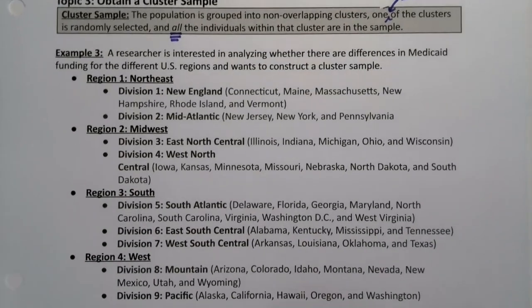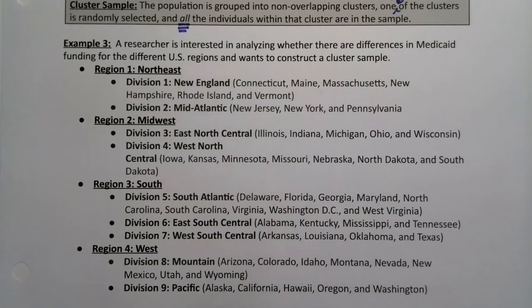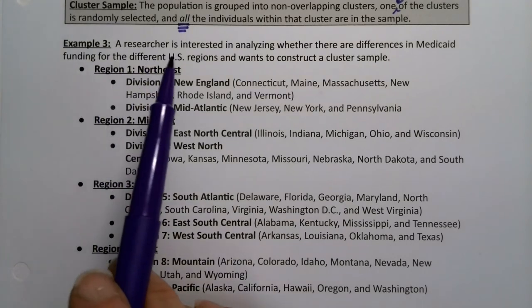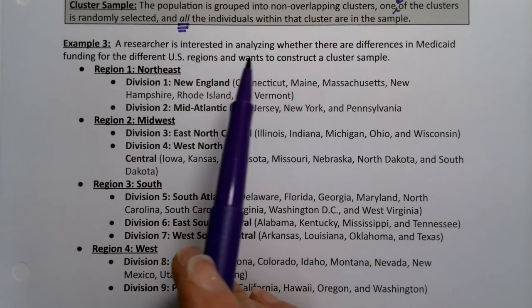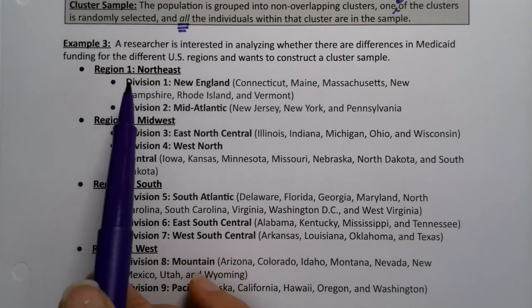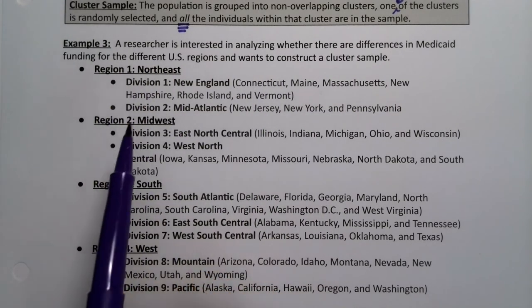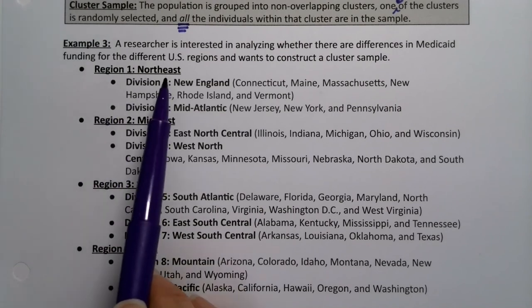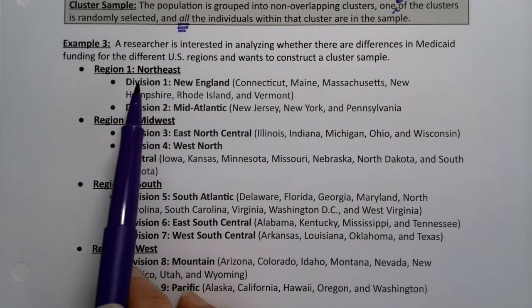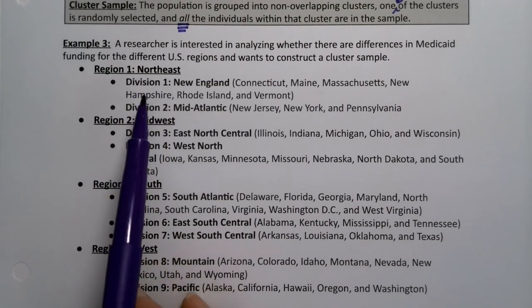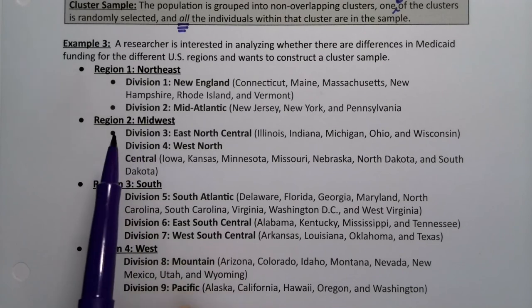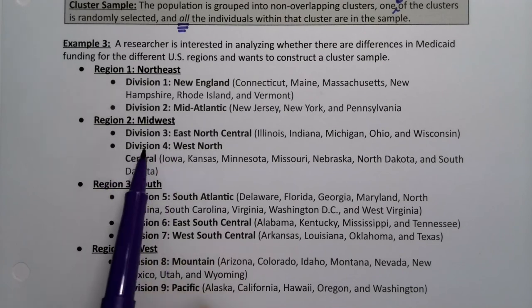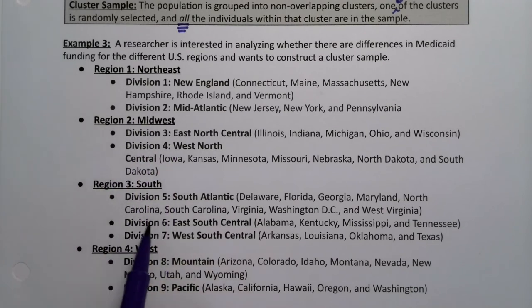We can see here the U.S. Census data. The Medicaid regions are breaking down along the U.S. Census regions. Region 1 was the Northeast, but Medicaid breaks that into two divisions. Then the Midwest has two divisions, and so on.